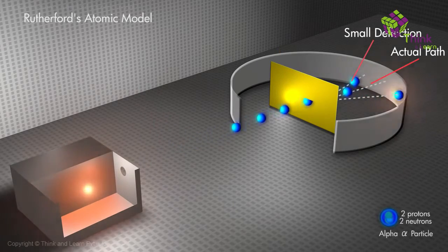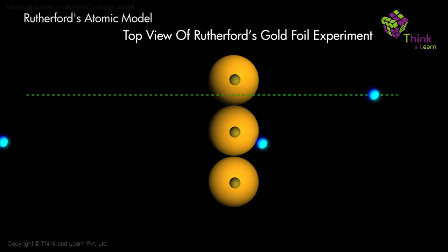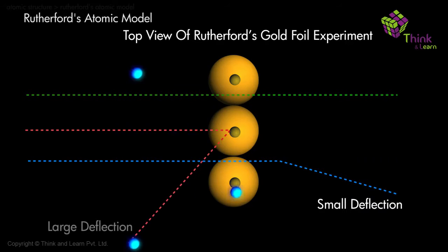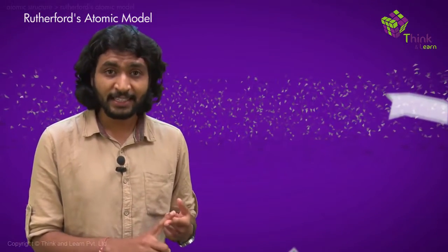The discoveries of this experiment were about to completely change the way we perceive the atomic world. Rutherford's model basically gave us three major things: First, most of the space in an atom was empty. Second, there was a nucleus at the center that was positively charged. And third, the electrons were revolving around the nucleus in circular orbits.